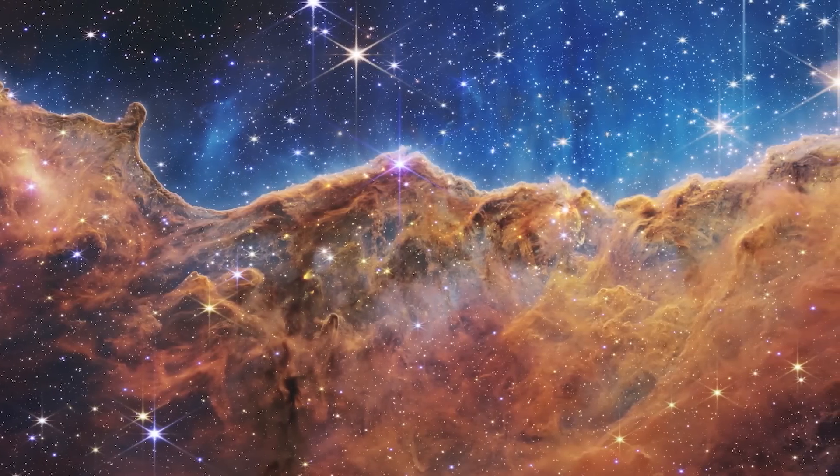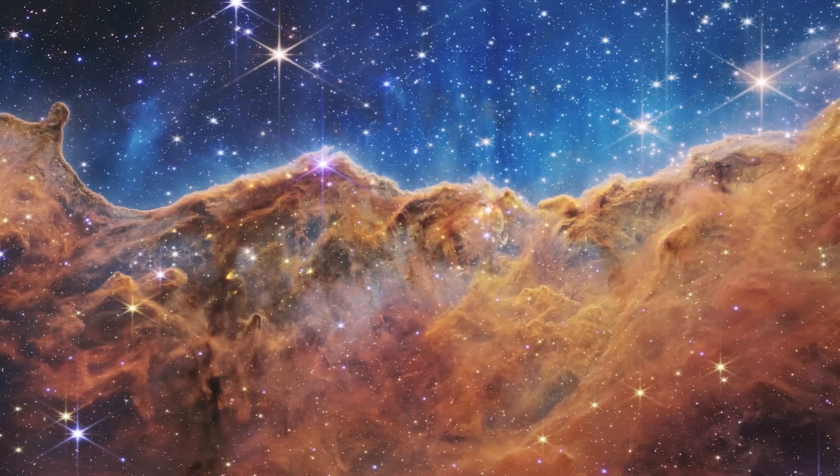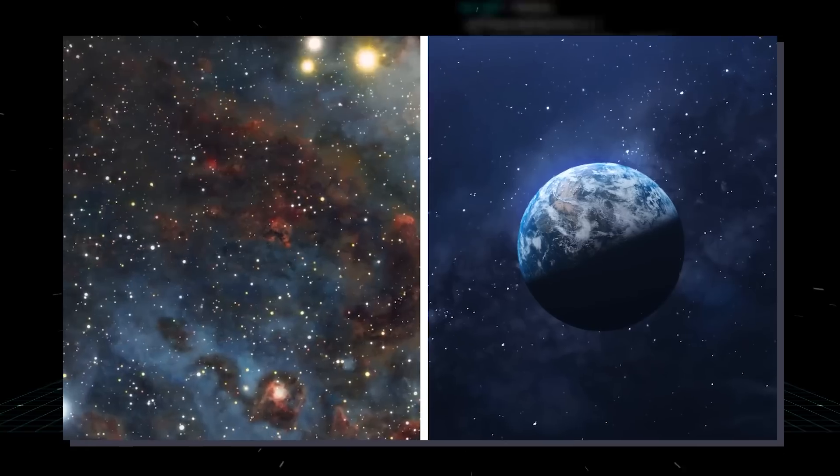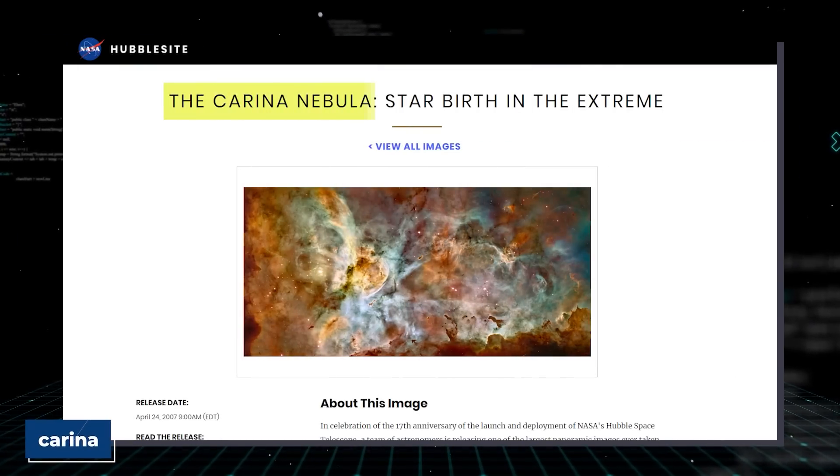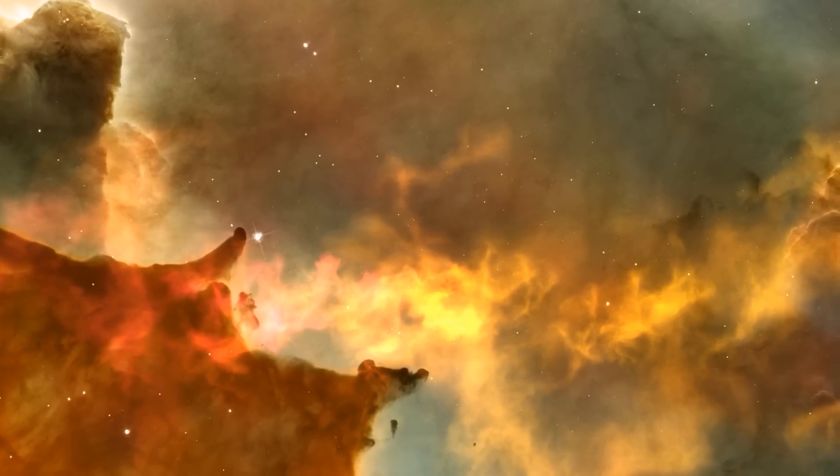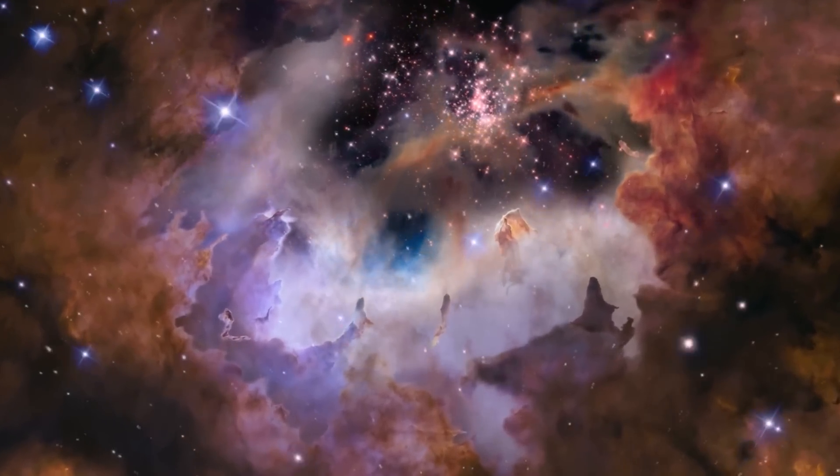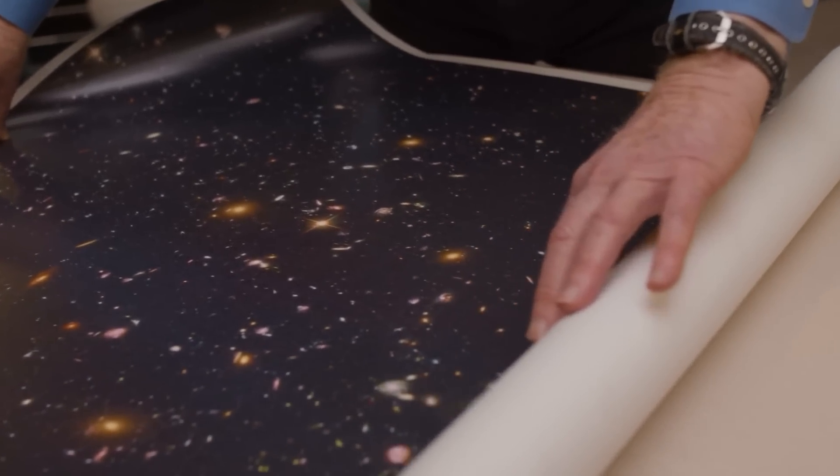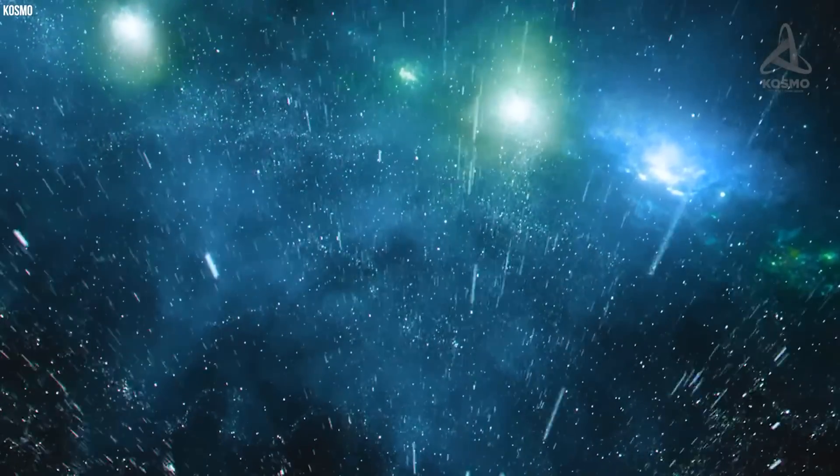The next image shared by NASA portrays the most stunning cosmic baby boom you will ever see. This bright and glassy hotbed of star formation is located approximately 7,600 light-years from the Earth in the southern constellation called Carina. What looks like a landscape full of mountains and valleys sprinkled with glittering stars depicts the edge of a young star-forming region in the Carina Nebula. Astronomers believe this is one of the most active star-forming regions they've ever seen. It is home to lots of stars much larger than the Sun.